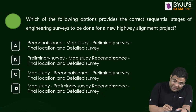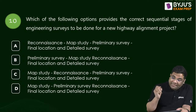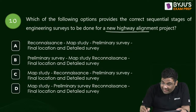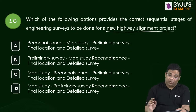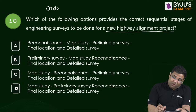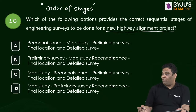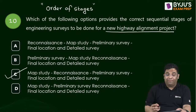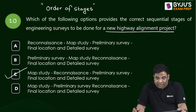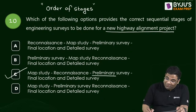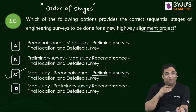Question 10: The correct sequence of engineering survey for a new highway alignment project. First is map study, then reconnaissance, then preliminary survey, and finally final location and detailed survey. Some students feel preliminary survey happens first — no, map study and reconnaissance come before preliminary survey.